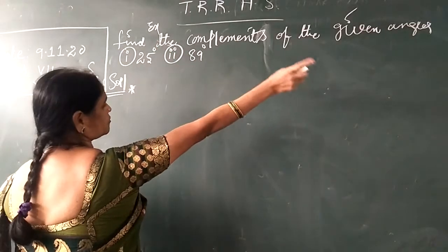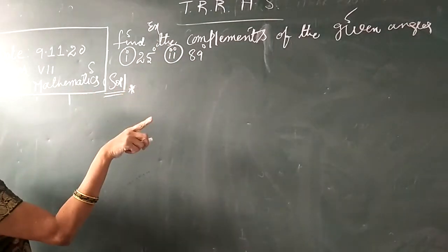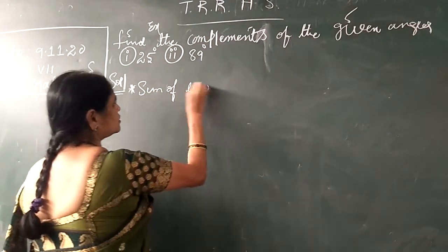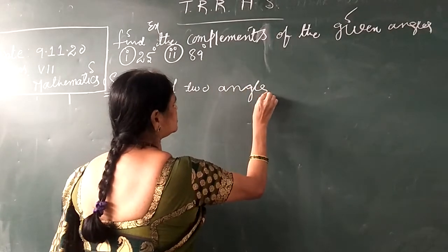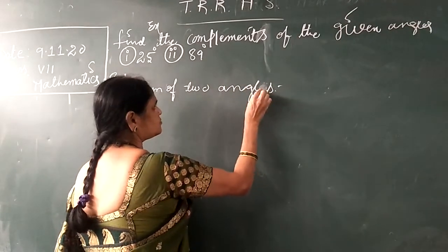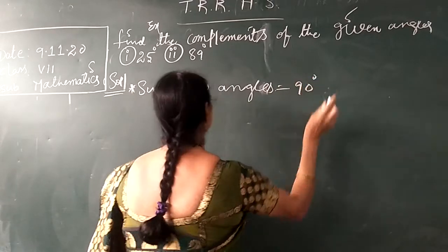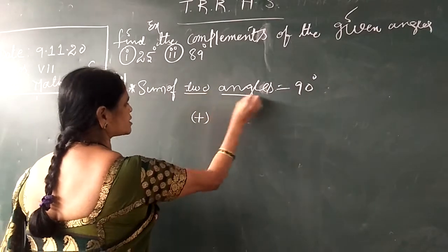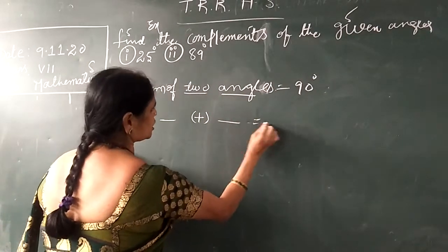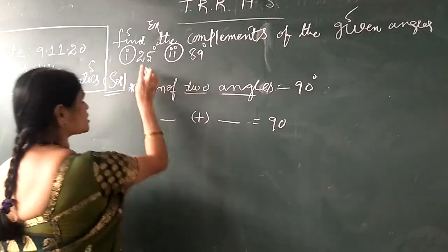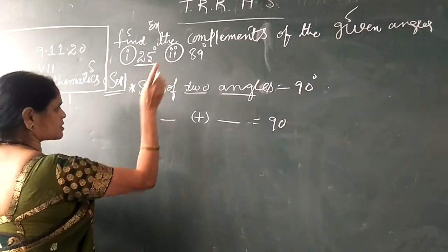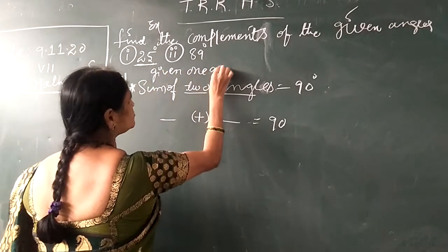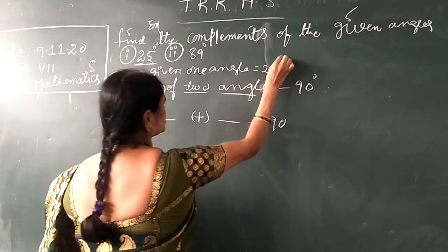First one: find the complementary of the given angles. So what is a complementary angle? The sum of two angles is equal to 90 degrees. So the sum of these two angles should equal 90 degrees. How many angles are given? Only one angle is given. The given angle is equal to 25 degrees.